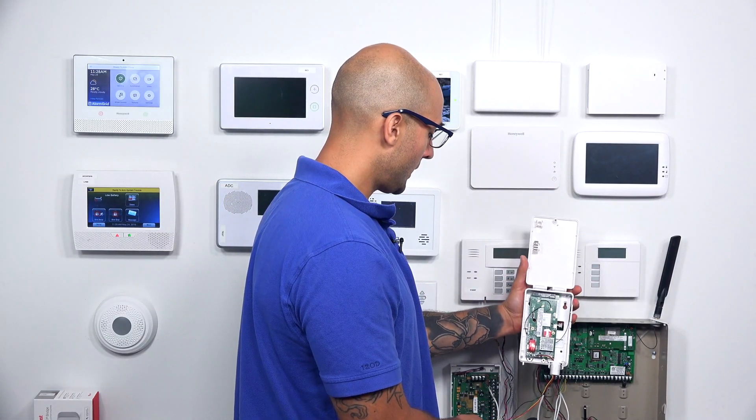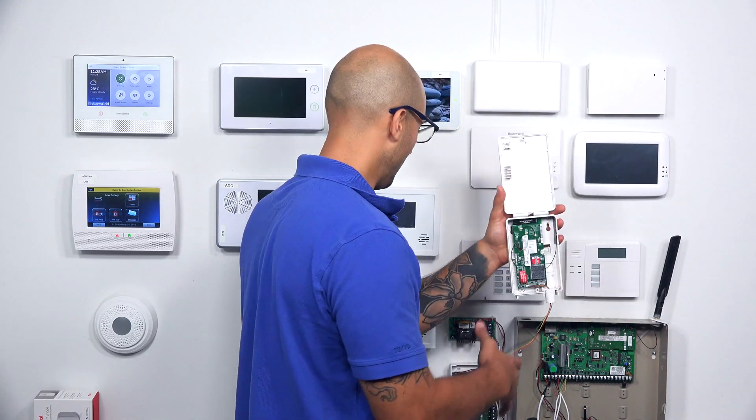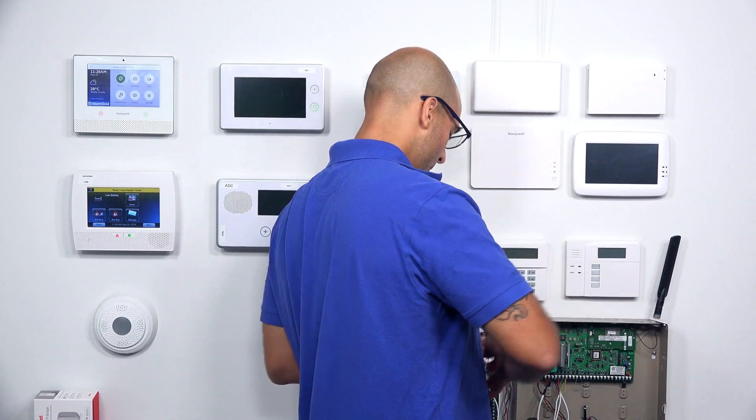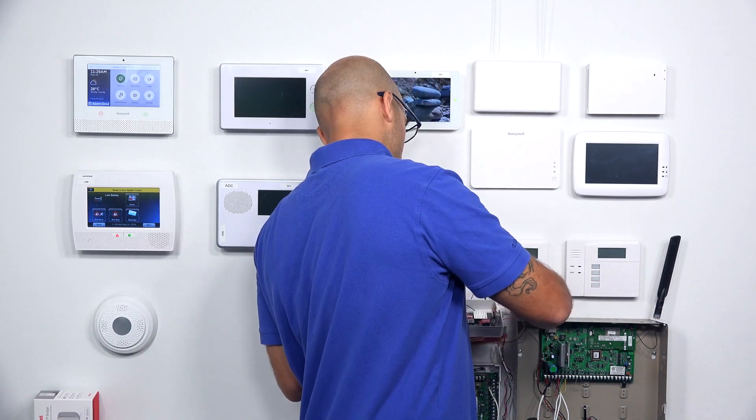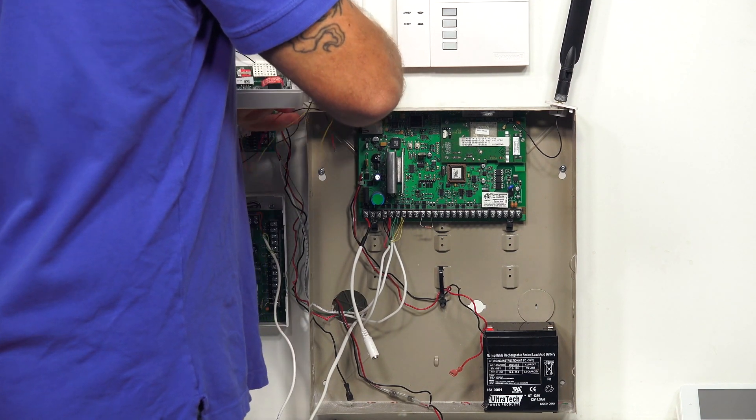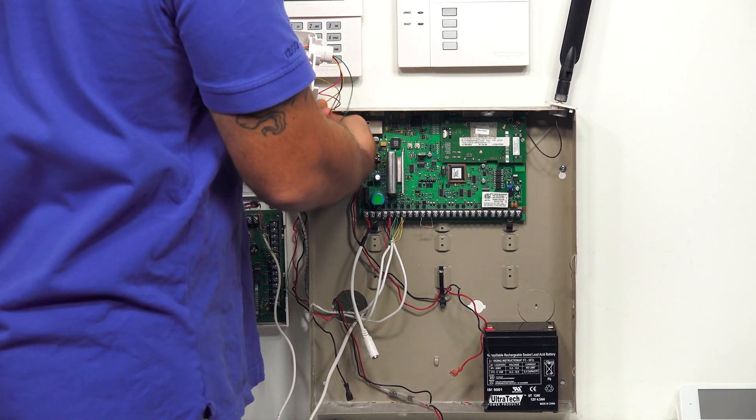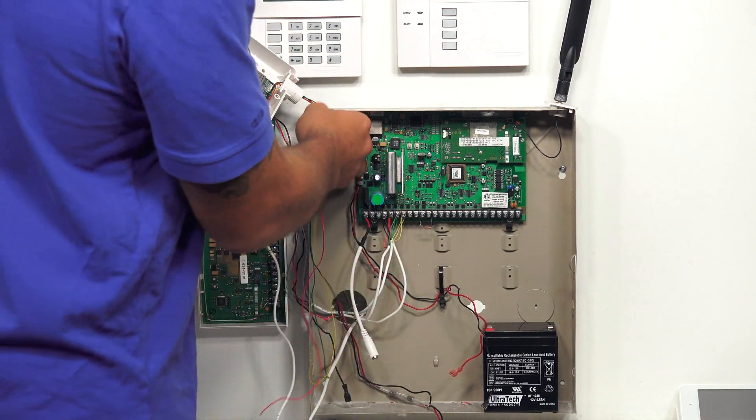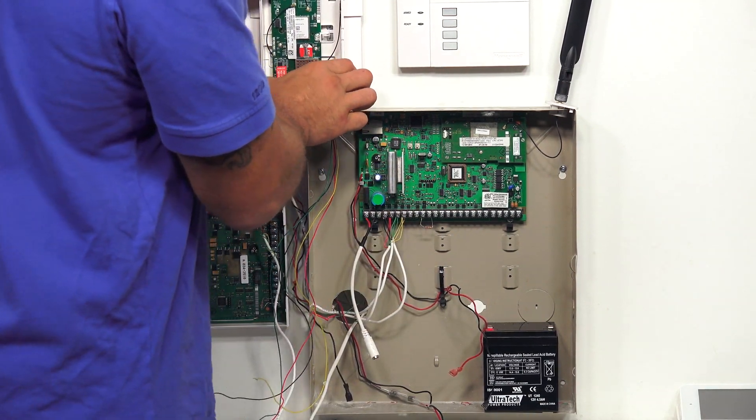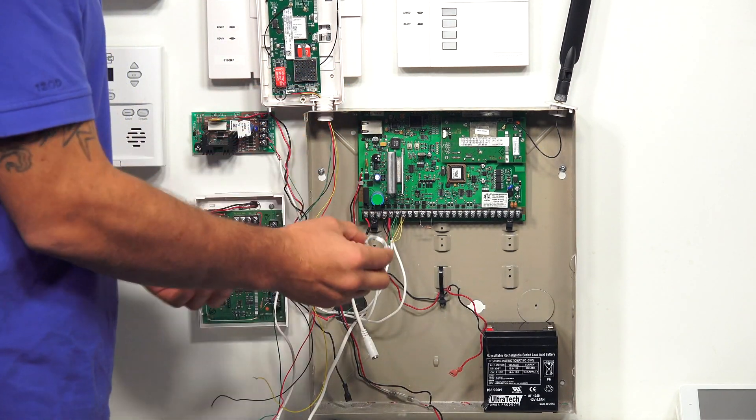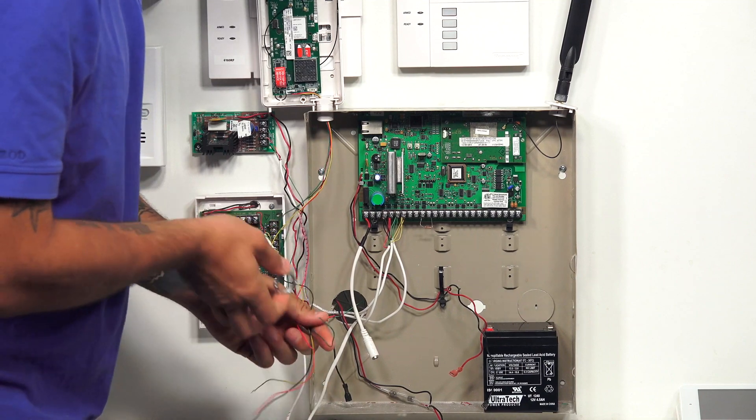Next, we're going to take our LTE-XV, and we're going to install it on the system. So I'm going to take all of the wires that come with it. I'm going to slip them through this punch out. It's going to sit right there. It also comes with a lock nut that will keep it in place.